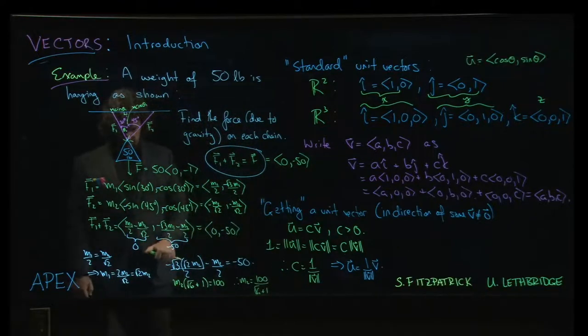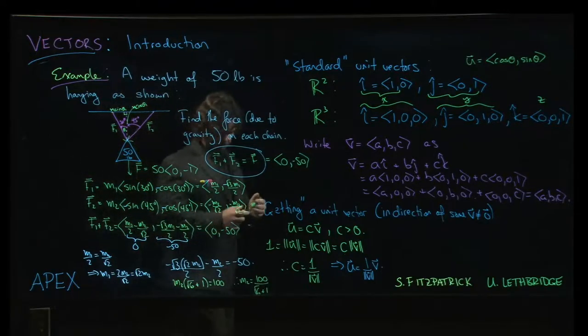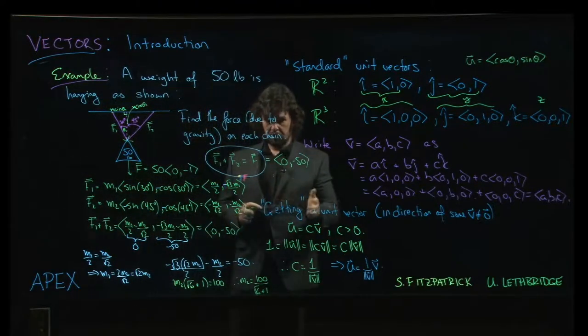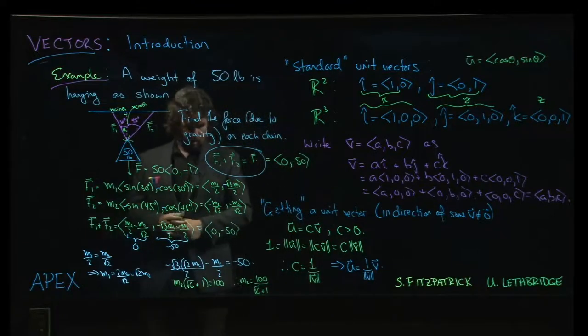And so that means that M2 will be 100 over root 6 plus 1. And M1, well, now we can just multiply by the root 2, right? So M1 will be root 2 times that whole thing.